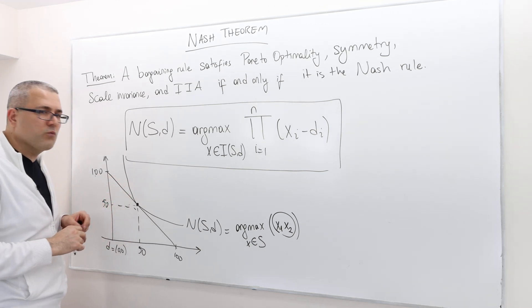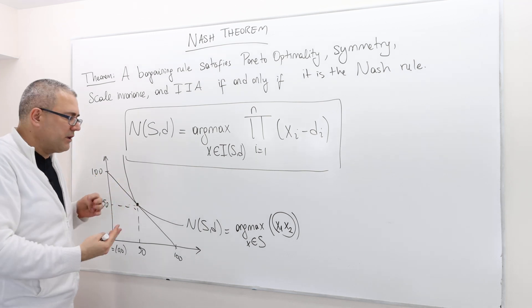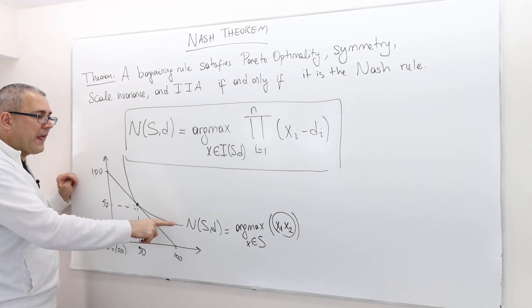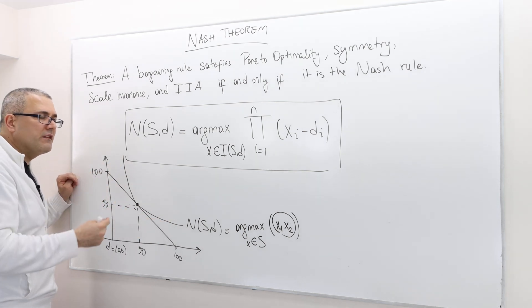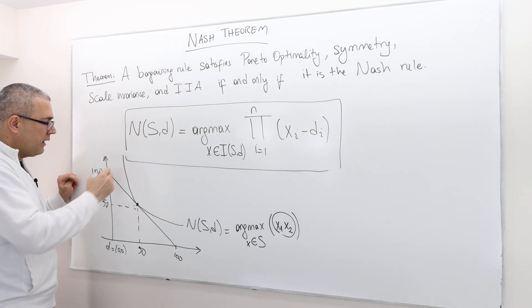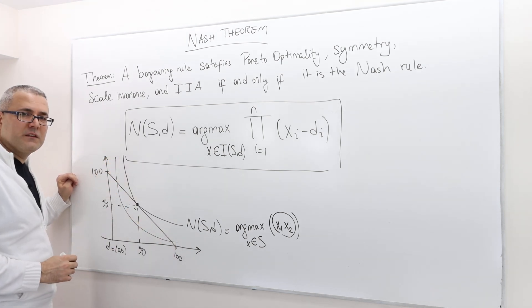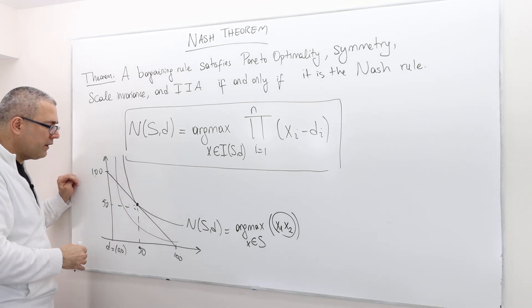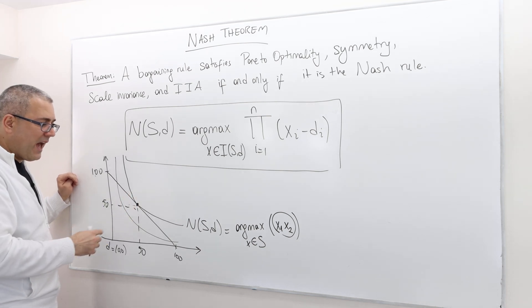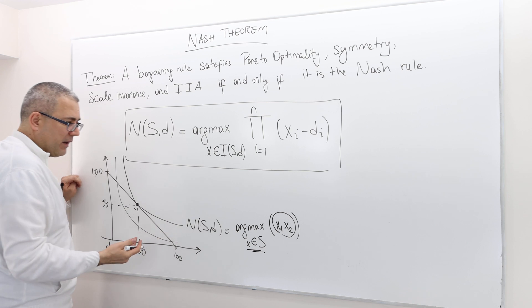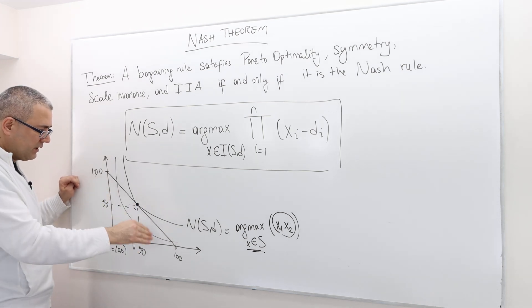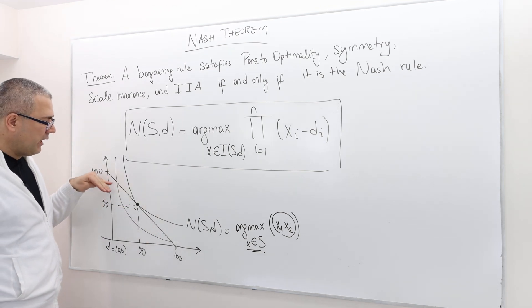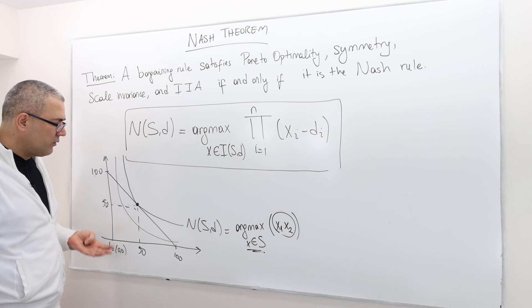Set of all X1 and X2s where the value of X1 times X2 is the same. We don't call it indifference curve, obviously, in the bargaining framework. But the idea is very much like indifference curve. But this is a set of all X1 and X2s where X1 times X2 gives us exactly the same value. Obviously, if you want to have a different X1 times X2 value, it's going to have a different level curve. But the thing is, we would like to maximize that. And the point,